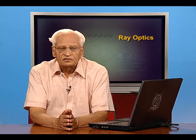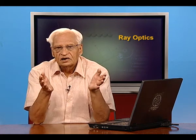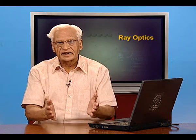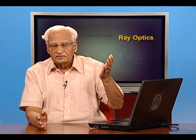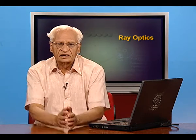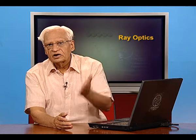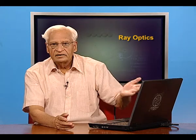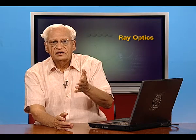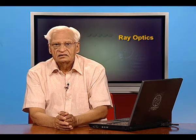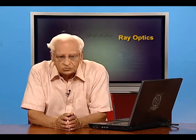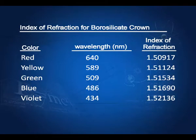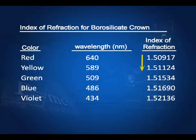You also know that white light consists of several colors — seven prominent colors — and these colors are actually different wavelengths. So the refractive index of glass or any other medium is different for different wavelengths. Look at this table: it has the colors red, yellow, green, blue, and violet, with wavelengths 640 nanometers, 589, 509, etcetera, along with their indices of refraction.